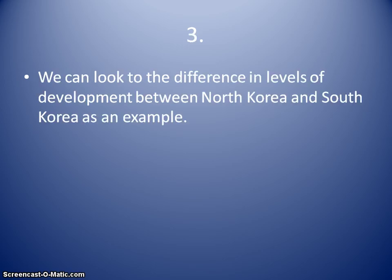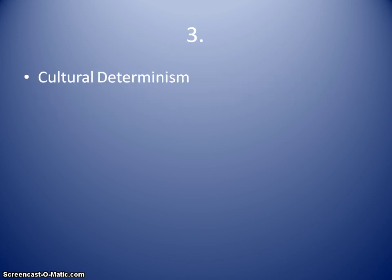Statement three: we can look to the difference in levels of development between North Korea and South Korea as an example. Obviously, South Korea has developed much further and faster than North Korea, with the communist totalitarian regime in North Korea versus the more free-market capitalism in South Korea. That's going to be cultural determinism — looking at the cultural elements. The Koreas are the same culture, but the elements imposed by their particular society differ. One political structure allows more freedom and openness, and that has allowed South Koreans to develop much further.